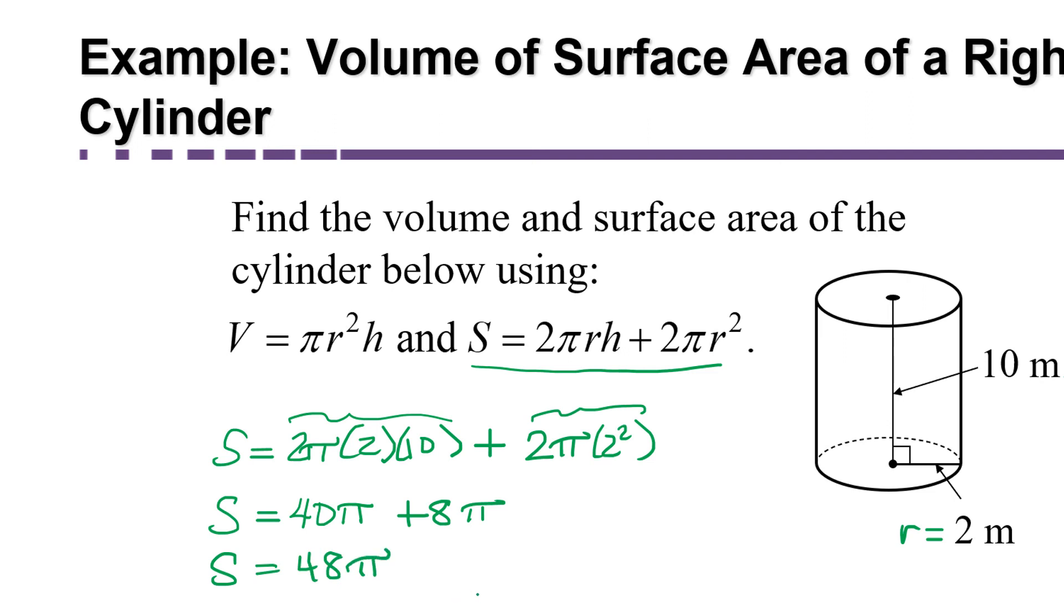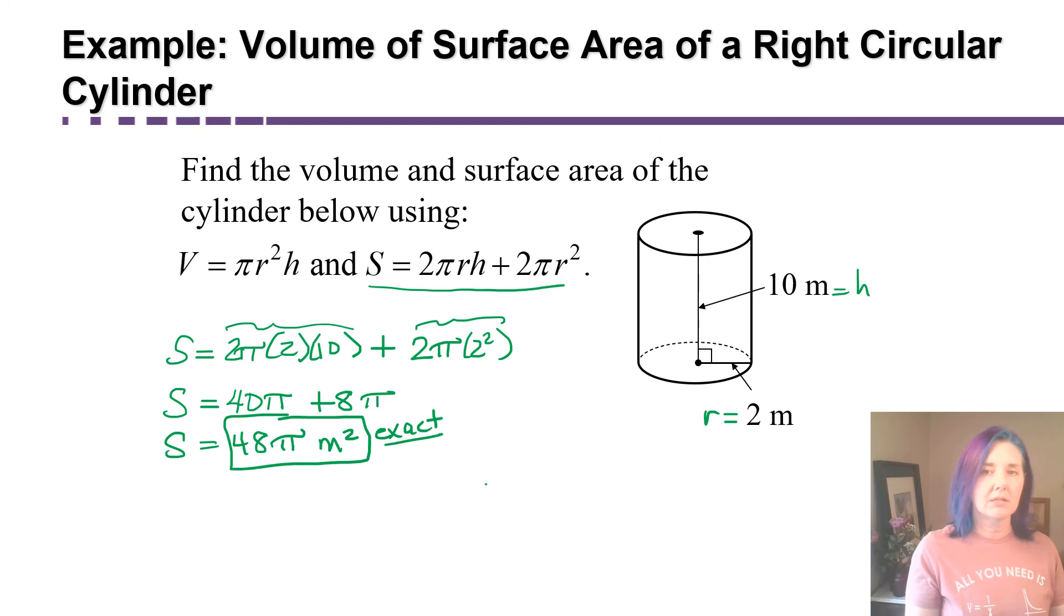What would the units be? Well, surface area is an area, so it's measured in square units. So this is going to be square meters. This would be your exact solution. A lot of times people are bothered by that. They think an exact solution needs to be a decimal, but no. When I say exact, leave pi in your answer.